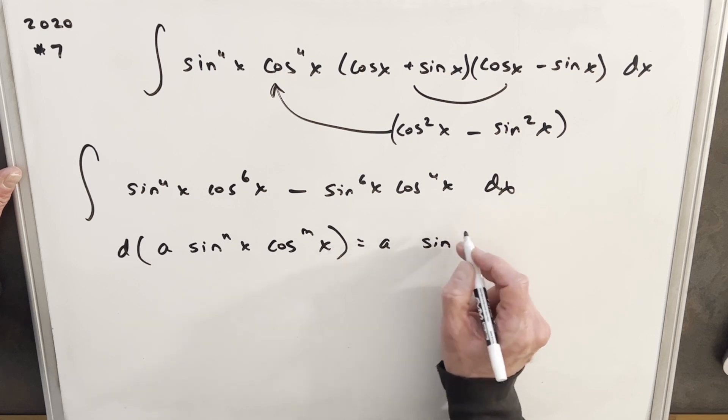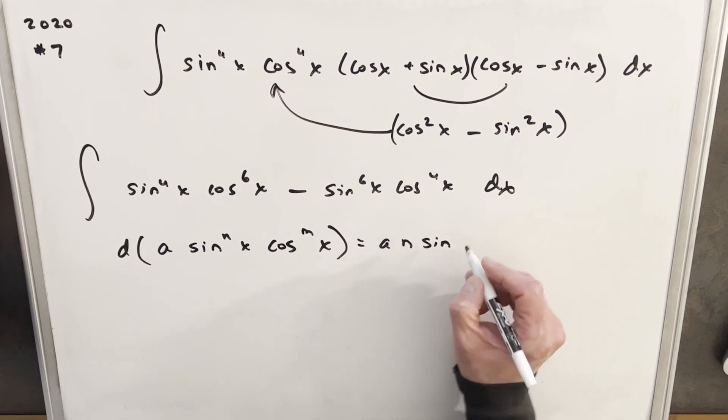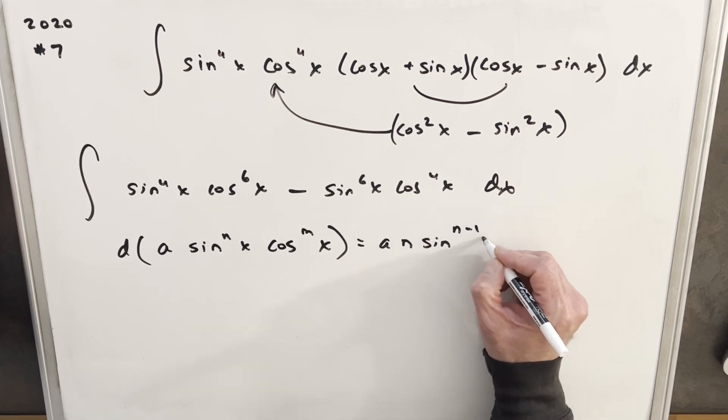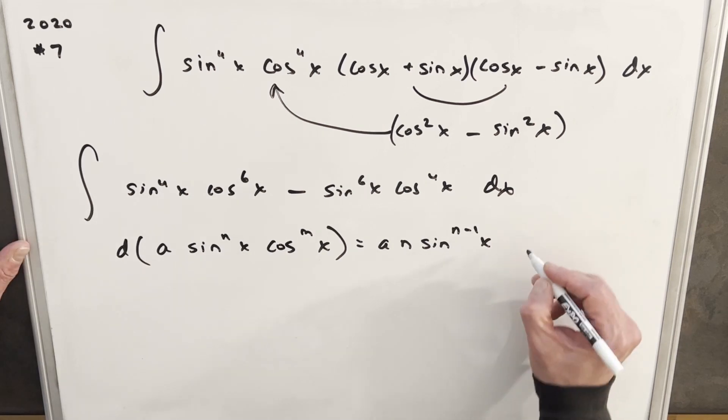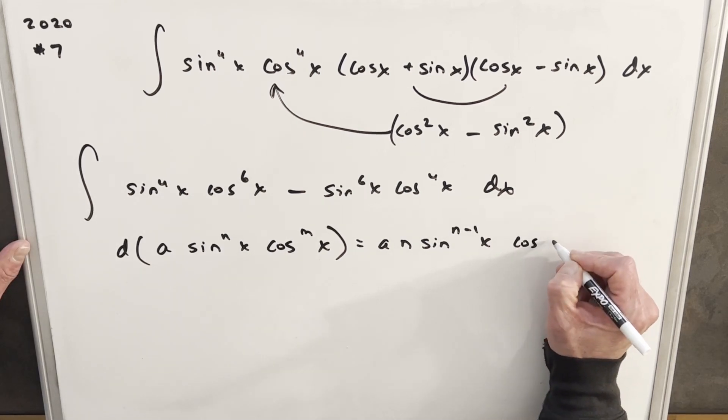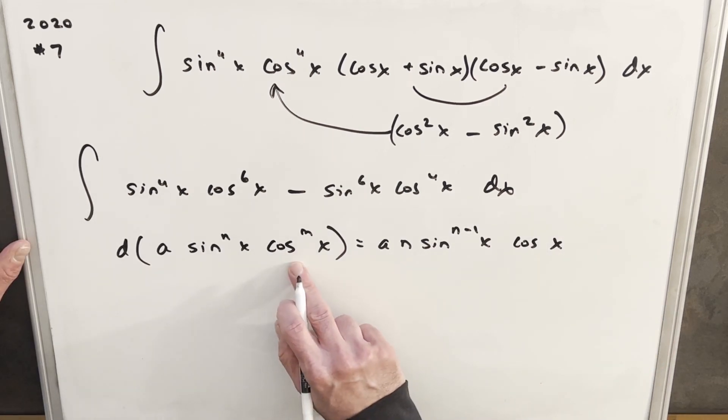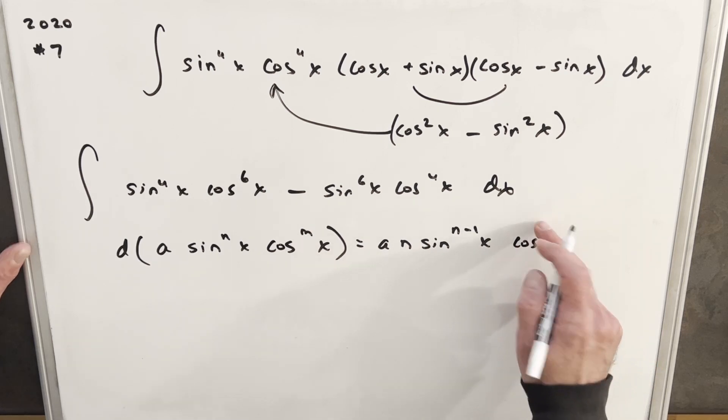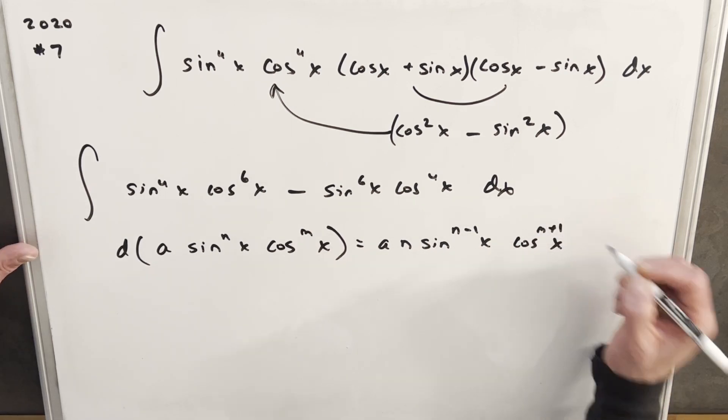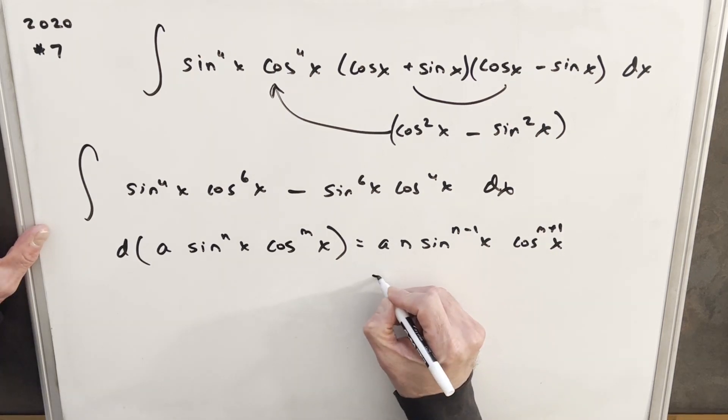Then on our sine, we'll have the derivative of sine to the nx is going to be n sine n minus 1 x. Then using the chain rule, we're going to have cosine x. And then we're going to have this cosine mx. But cosine mx times cosine 1x, this is going to give us cosine m plus 1. And then for our next term,